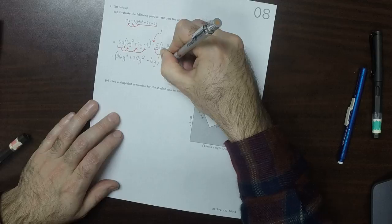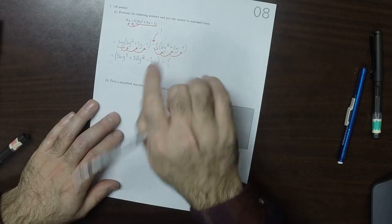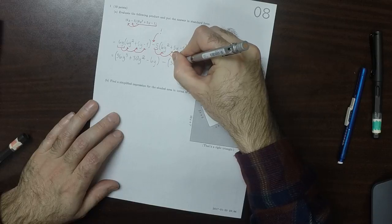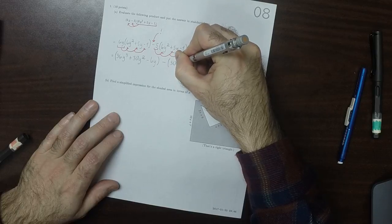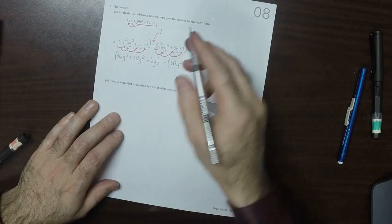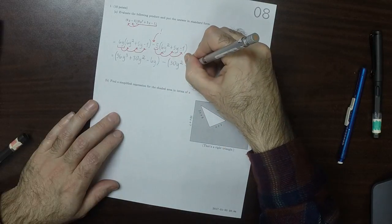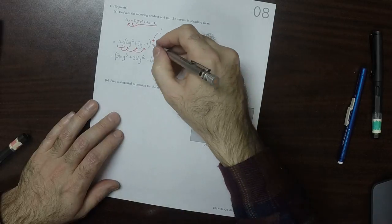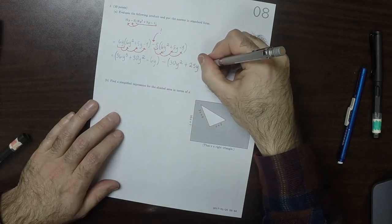Now minus, I'll leave that minus there and just distribute the 5 in. So that would be 30y squared. So 5 times that. Now 5 times 5y is plus 25y, and then minus 5.